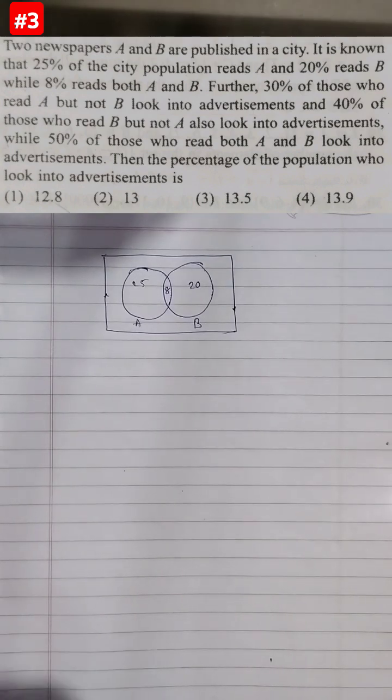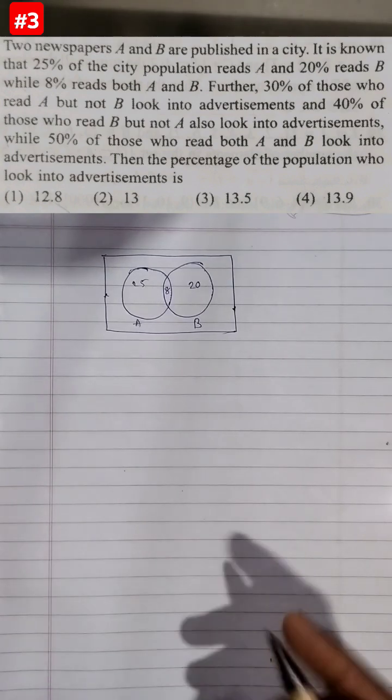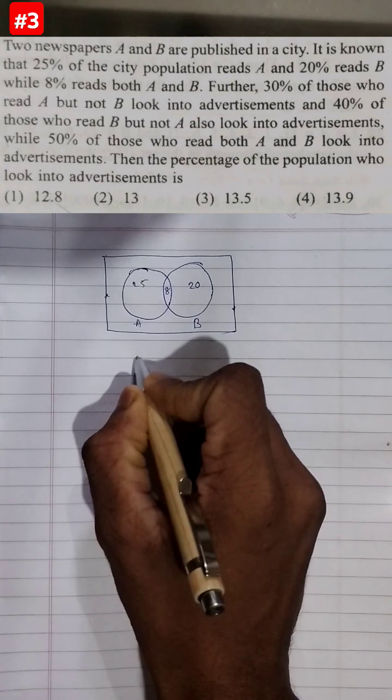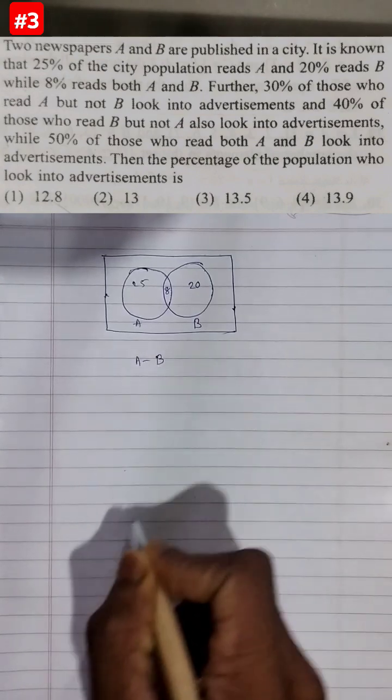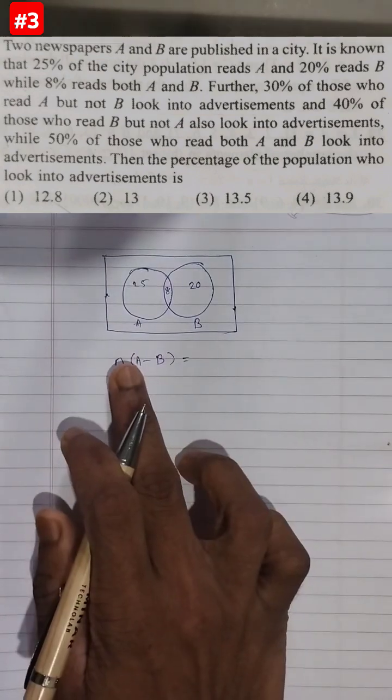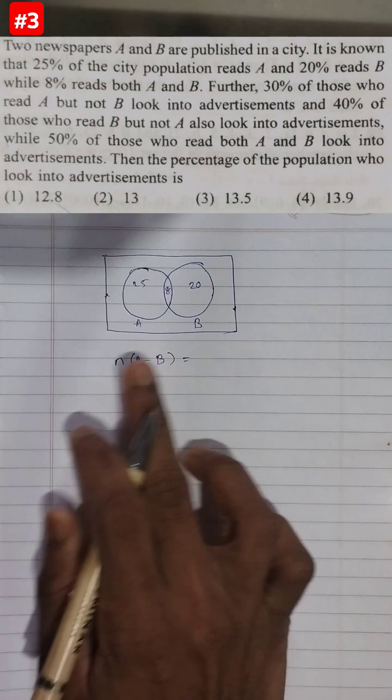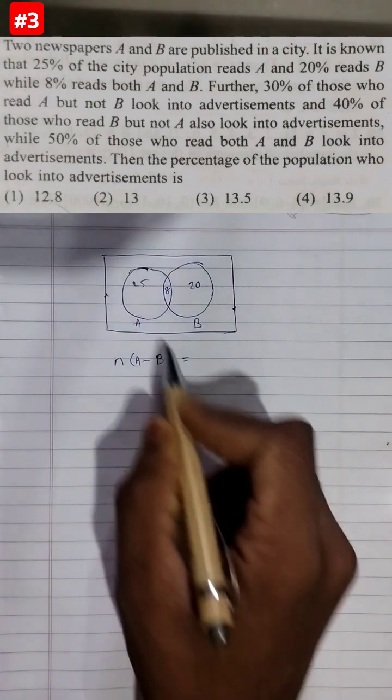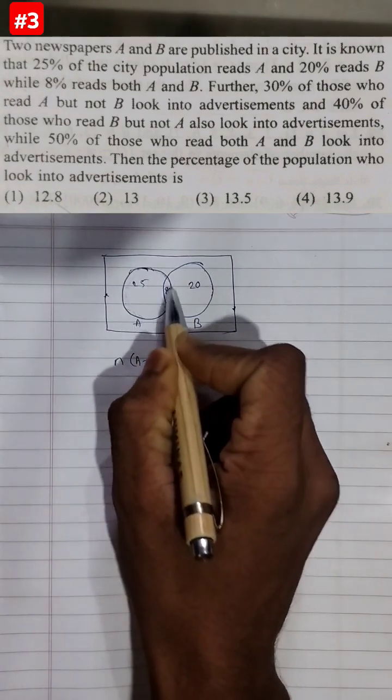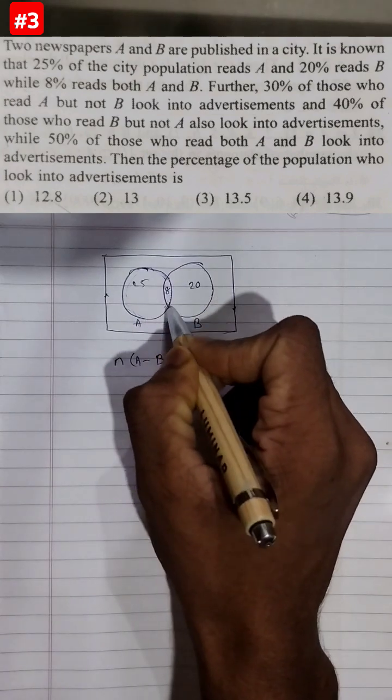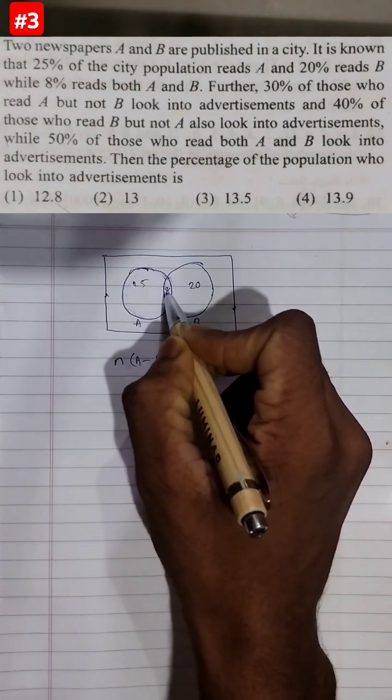They are talking about the people who read A but not B. That is A minus B. Number of people who read A but not B is n of A minus B. Let's take it like this: 25 is the area of this entire circle, and this smaller portion, the intersection part, has its area 8.